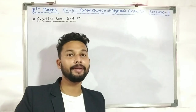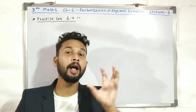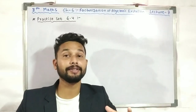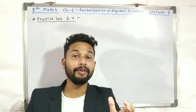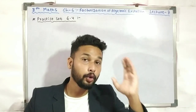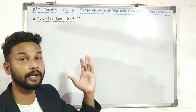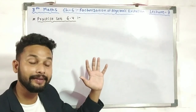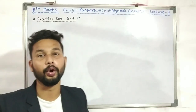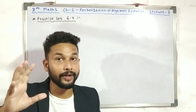Basically, in lecture number 6 we saw how to simplify algebraic expressions — how to put them in rationalized or simplified form. We learned this in the previous lecture. Today we are going to solve a practice set, the last practice set, which is Practice Set 6.4. We are going to simplify again.